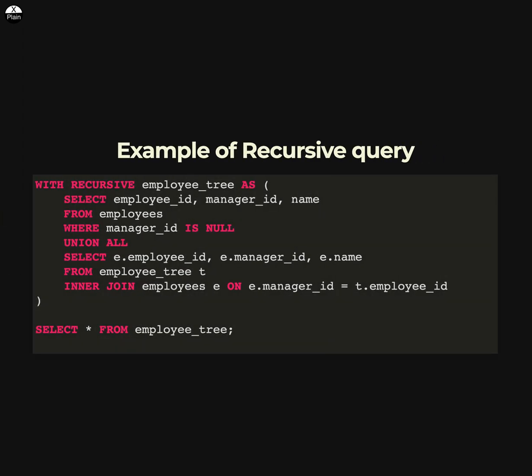Here is an example of a recursive query in SQL. This query retrieves a list of all employees along with their manager ID and name, and displays them in a hierarchical structure. The first SELECT statement in the WITH clause retrieves all employees with a null manager ID.